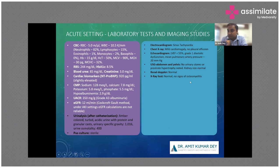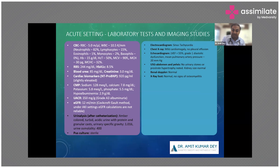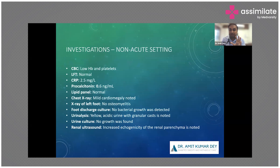Ultrasound showed no urinary stones or prostatic hypertrophy, helping exclude obstructive uropathy. Kidney size was normal with no increased renal echogenicity. Renal Doppler was also normal. X-ray of the foot was normal with no signs of osteomyelitis. This is a very important take-home point: whenever you examine a patient with a foot ulcer, always get an X-ray done to check the bone. The ulcer might not look bad externally, but the bone can be affected internally, which will completely change the treatment strategy.